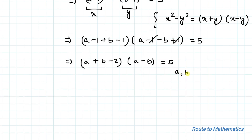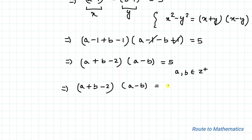As it is given that a and b are positive integers, and 5 is a prime number, the factors of 5 are 1 and 5 itself. So we can write (a + b - 2)(a - b) = 5 × 1.